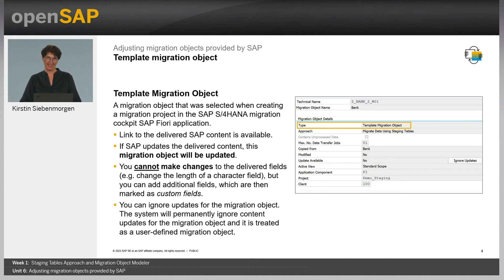Let's have a deeper look at the Migration Objects which are delivered by SAP. If you add a Migration Object in the SAP S/4HANA Migration Cockpit Fiori app, the Migration Object is classified as a Template Migration Object and the linkage to the delivered SAP content is still available. It is also useful to know that you cannot make changes to the delivered fields, for example change the length of a character field, but you can add additional fields. These fields will be marked as custom fields. If there is an update available on the delivered content, you will get the information and can then choose to update the Migration Object. You also have the possibility to ignore the content update.